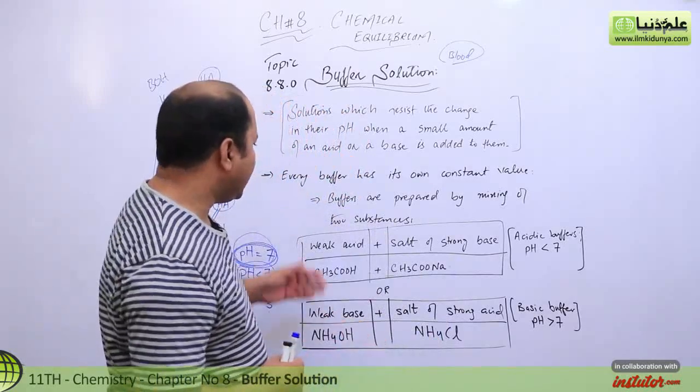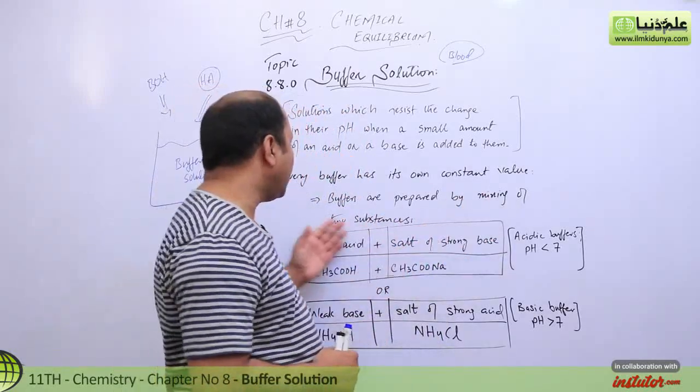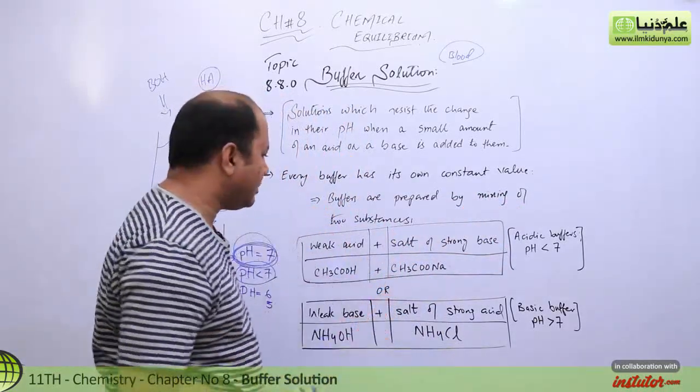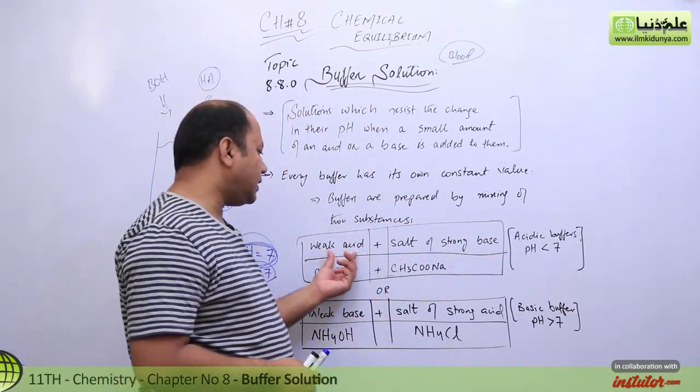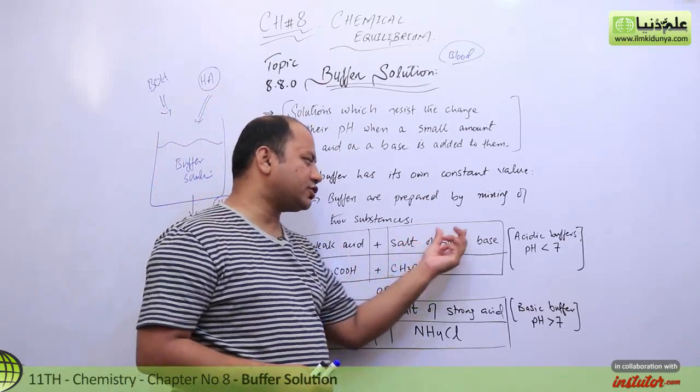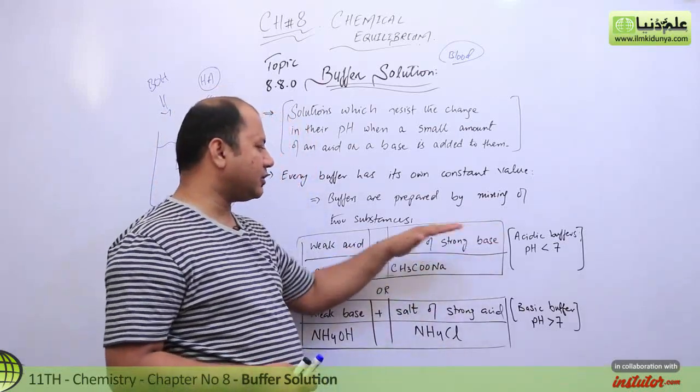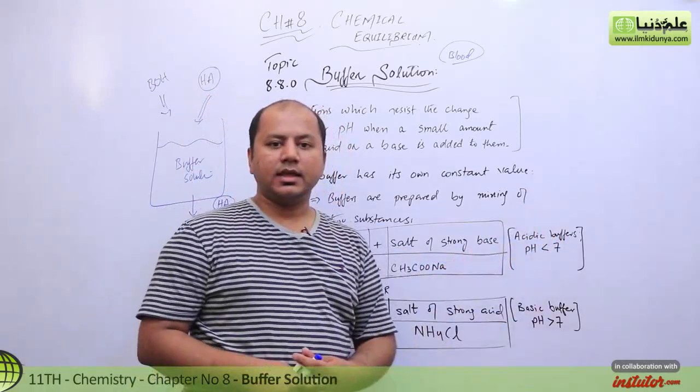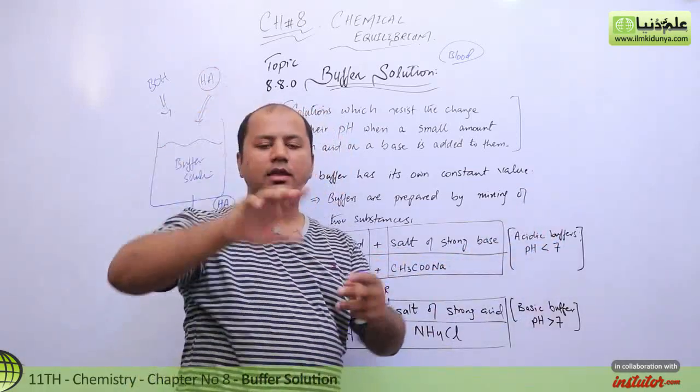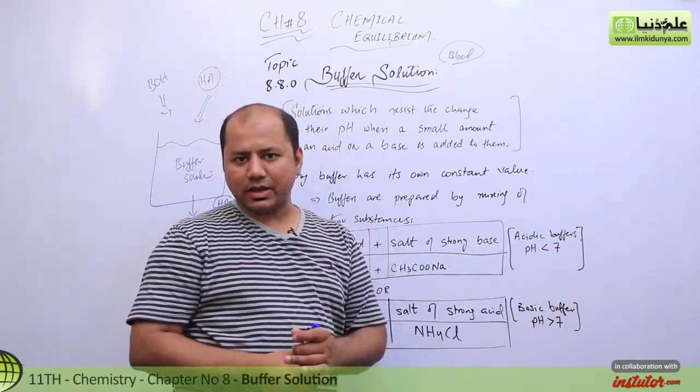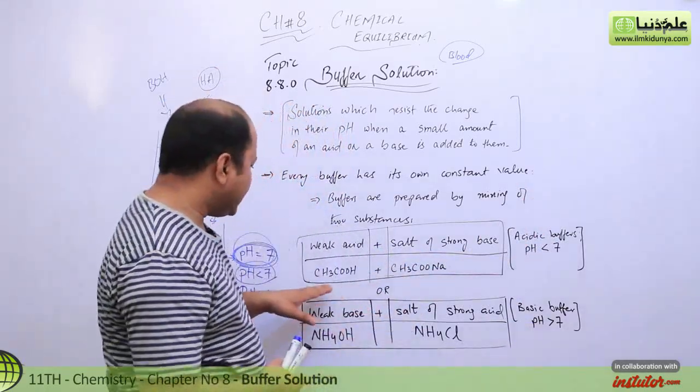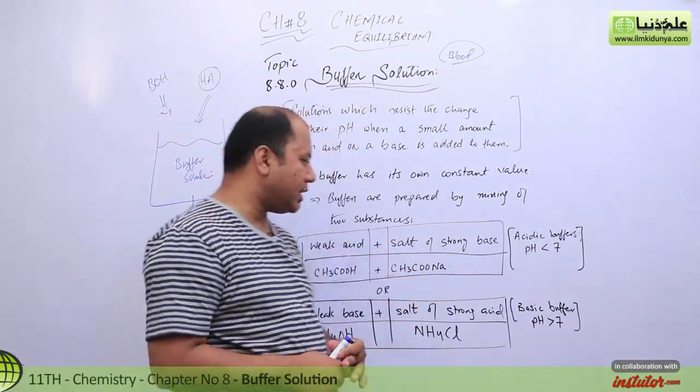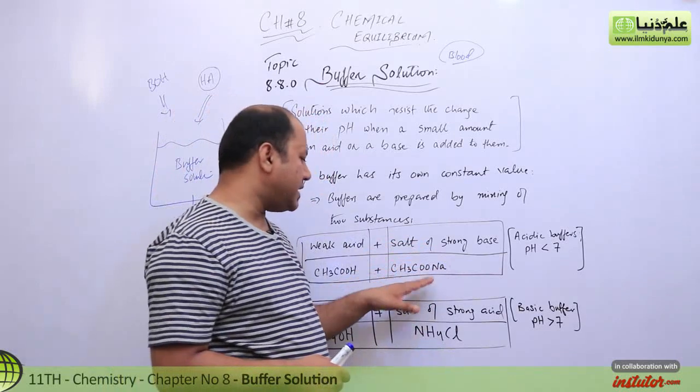So buffer solutions are prepared by mixing of two substances. Majorly kaun si aisi cheezein hoti hain jo buffer solution mein use ki jati hai? Weak acid aur salt of a strong base. Agar aap strong base ka salt use kar rahe hain, weak acid use kar rahe hain, toh students aap acidic buffer use kar rahe hai. Yaani aisa solution hai jis mein aap acid daal rahe hain, daal denge aur koi pH change nahi hoga. So here you have weak acid, acetic acid, aur salt sodium acetate jo ki ek salt of a strong base hai.